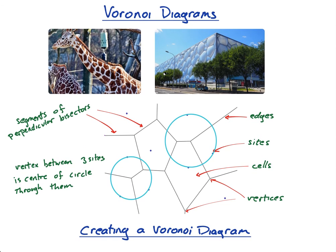In the next lesson we'll go through different examples of the types of questions you could be asked in your exam. I want you to know all the names — edges, sites, cells, and vertices. The school example is a good one you can relate to and use to explain what a Voronoi diagram is. I also want you to recognise that it's perpendicular bisectors that create the Voronoi diagram. See you in that lesson.